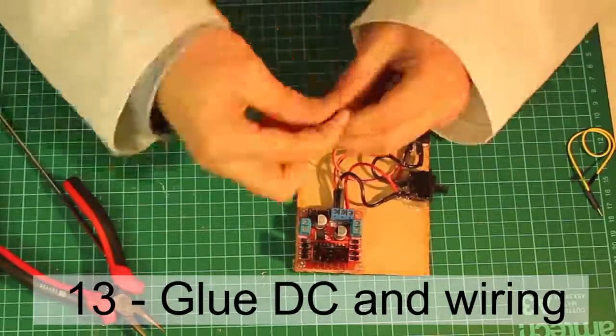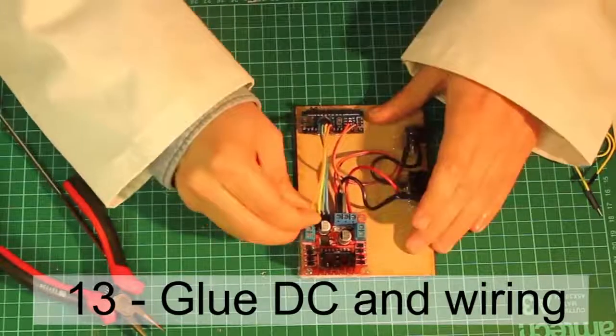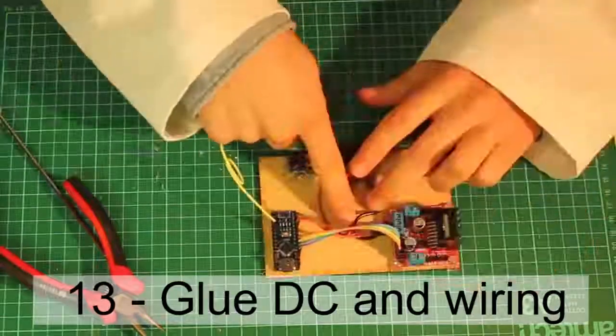Now connect the signals A0 to A3 into input 1 to input 4, and leave a free wire connected to ground.